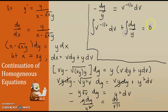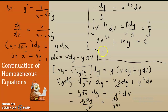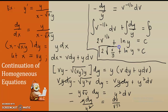Integrating: the integral of v raised to negative one half·dv is 2·v raised to one half, plus ln(y), equal to c. Substituting back v equals x over y, this becomes 2·square root of x over y plus ln(y) equal to c. This is the final answer.